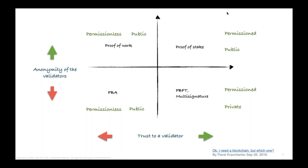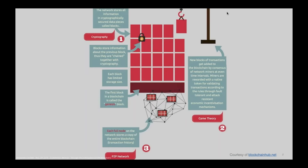Talking about Bitcoin and Ethereum, we are in the upper-left quadrant. They are permissionless and public, which means you don't have to ask anybody to be part of the network. You can join the network freely, and every node has the same rights. It's open and requires no permission to join. You may have other different kinds of blockchain flavors, but today we will focus only on those two.